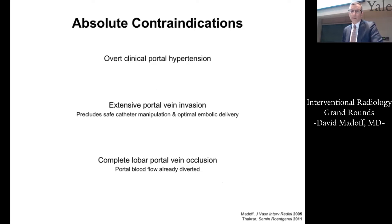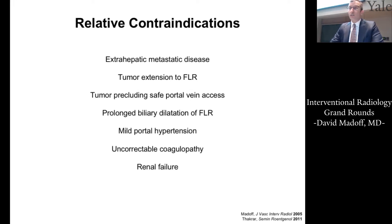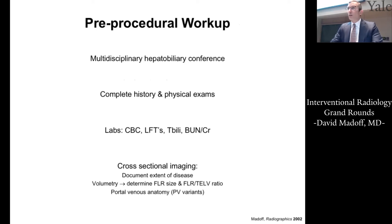Absolute contraindications to PVE include anyone considered a non-candidate for surgery, those with overt clinical portal hypertension, extensive portal vein invasion, or complete portal vein or lobar occlusion — as these patients may already have compensatory hypertrophy. Relative contraindications, some of which used to be absolute, include extrahepatic disease — in early days always considered absolute, but now patients with small amounts of extrahepatic nodules may still be operated on — and tumor extension to the future liver remnant, which relates to two-stage hepatectomies.